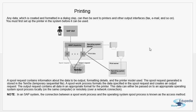The output request contains all data in an appropriate format for the printer, and can be passed on to an operating system spool process either locally or remotely. The spool request contains information about what data has to be outputted, the formatting details, and the printer details. The spool request is generated and stored in TemSe — sequential files stored in the operating system. A spool work process then takes the spool request and formats it into an output request understood by the operating system spooler.